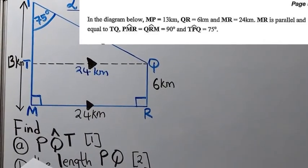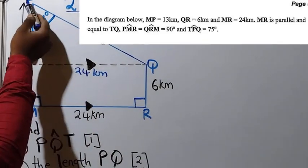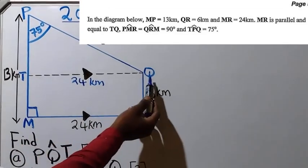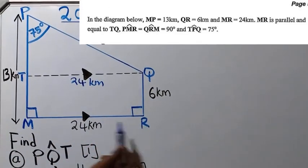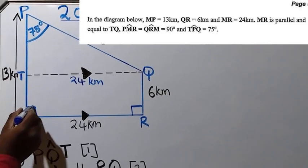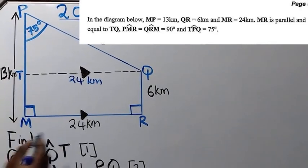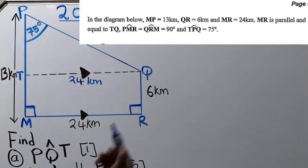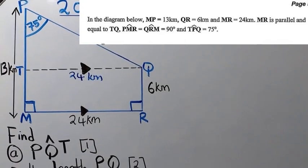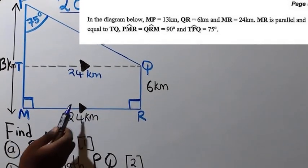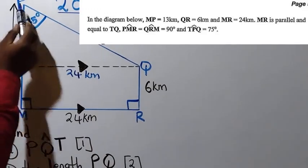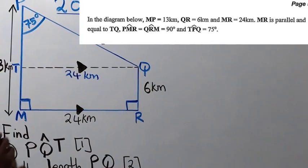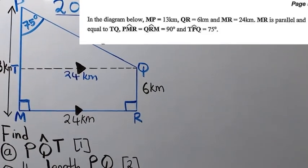Angle PMR is equal to angle QRM, meaning the angle at M equals the angle at R, so you have 90 degrees here and also 90 degrees there. And angle TPQ is 75 degrees. You need to understand all this information.